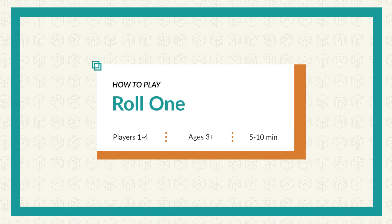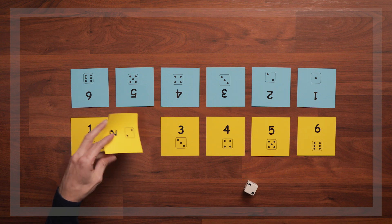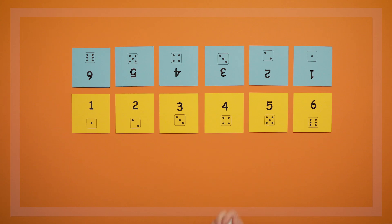This game is called Roll 1. It's the first of three roll games, which all involve rolling dice to match and turn over cards laid out on the table.